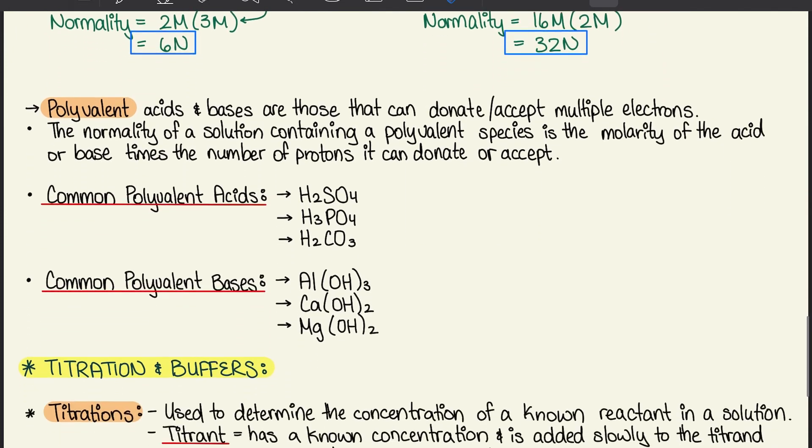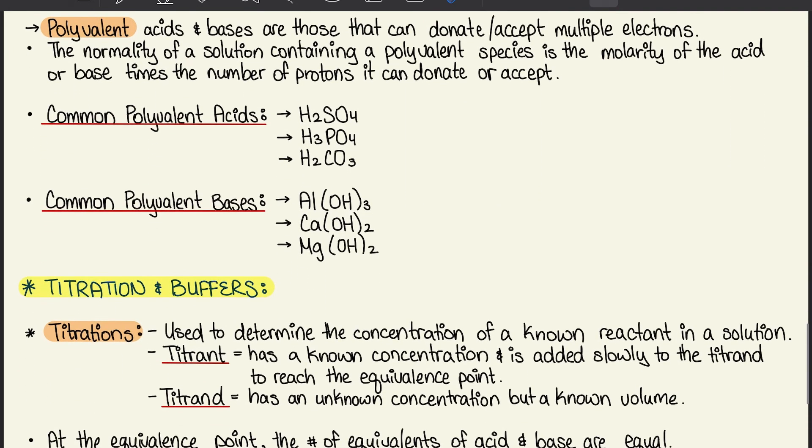For polyvalent acids and bases, these are those that can donate or accept multiple electrons. The normality of a solution containing a polyvalent species is the molarity of the acid or base times the number of protons it can donate or accept.